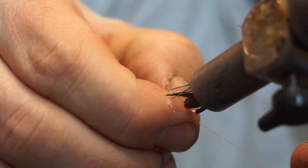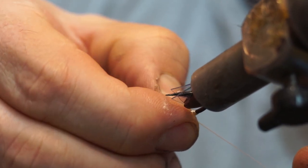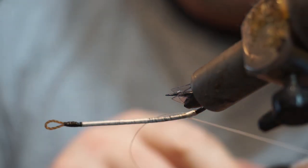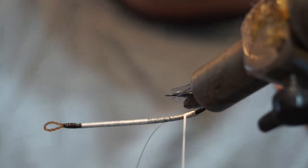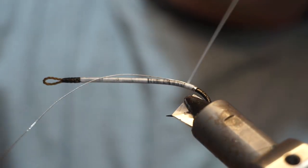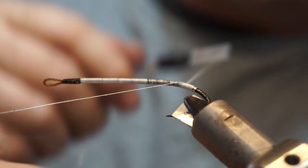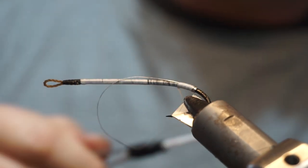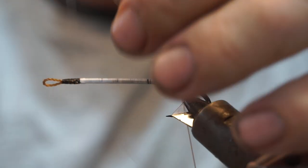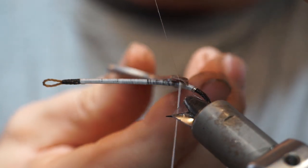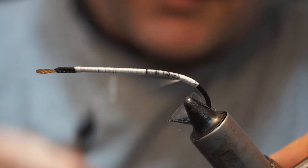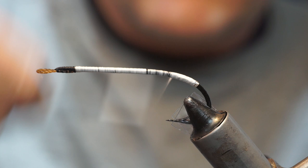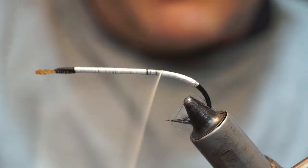I'm just going to use my thumbnail just to squash down that tinsel, and then I'm going to wrap over it forward. Once I get up to roughly the point where the butt is going to be, then I'll cut it off and continue wrapping.